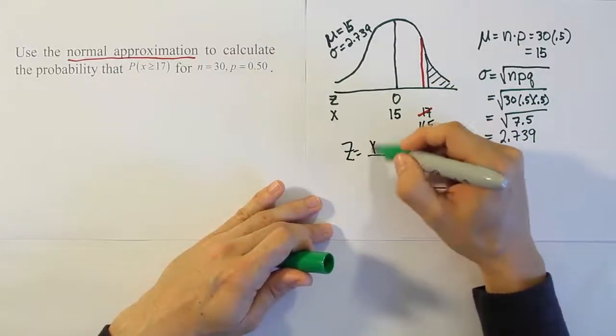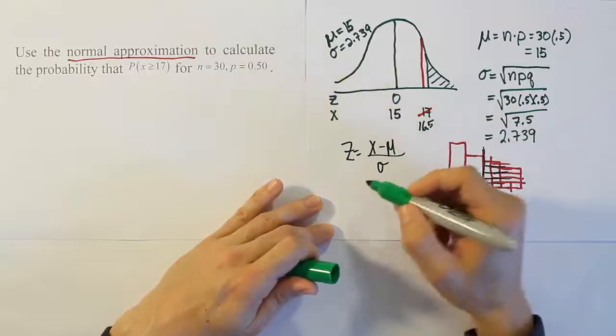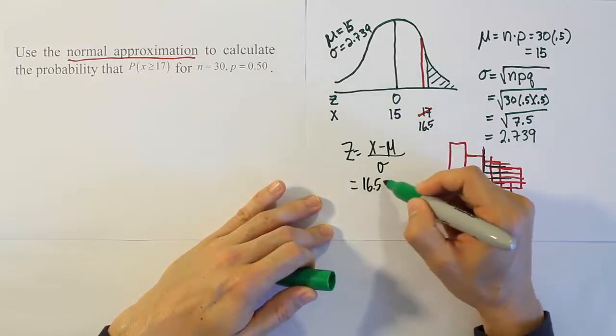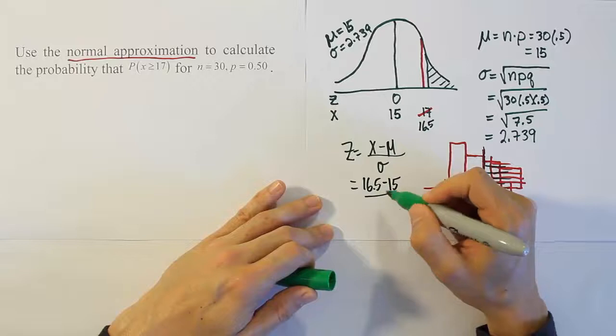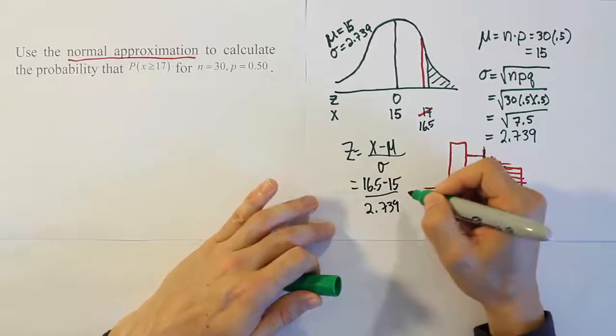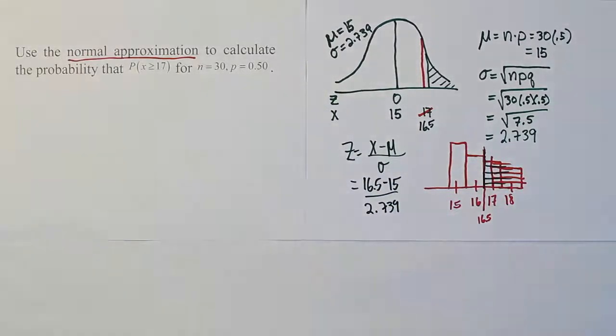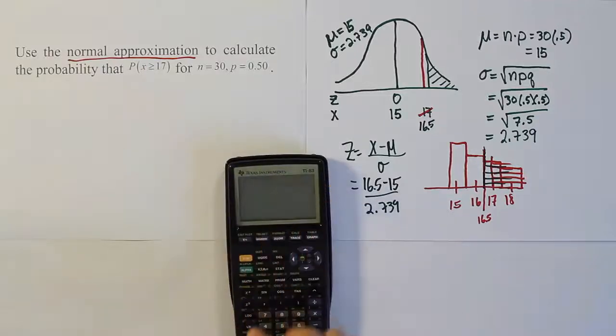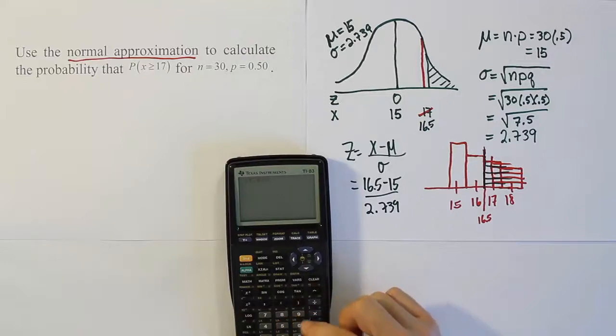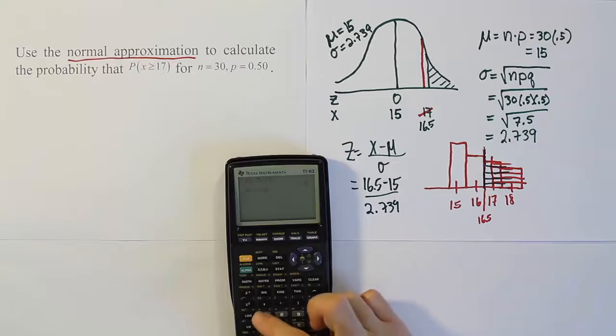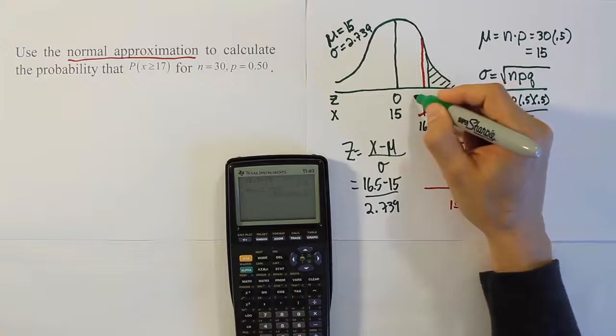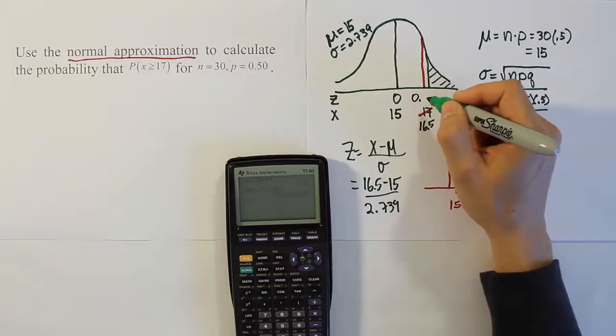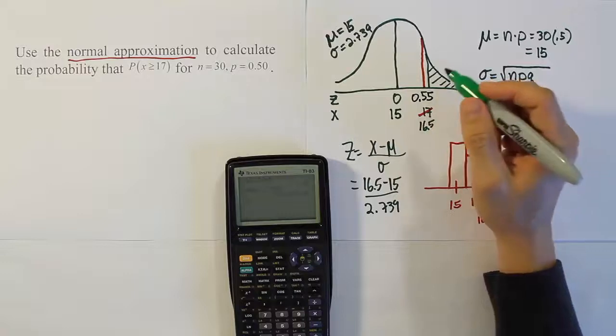So it's going to be this number that we convert to a z-score. The z-score formula, remember, is x minus the mean over sigma. So for us, the x here is 16.5 minus the mean, which is 15, over sigma, which is 2.739. Once you do that, you'll have your answer for the z-score, and the rest is just looking it up on the table. So we'll have 16.5 minus 15. Of course, that's going to give you 1.5. And we'll divide that by 2.739. And we get the answer 0.55. We round to two decimal places, which is going to be necessary for our z-table. Our z-table doesn't have more than two decimal places.